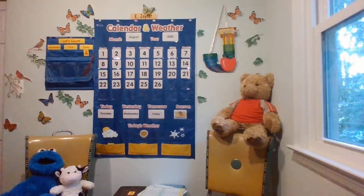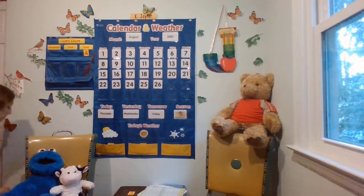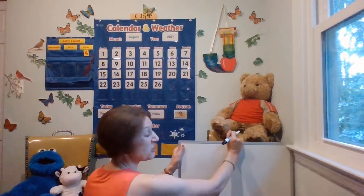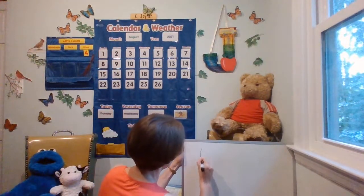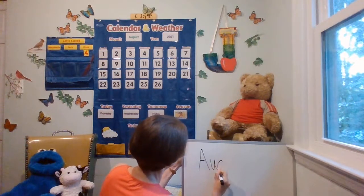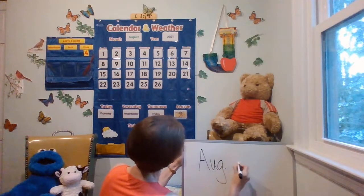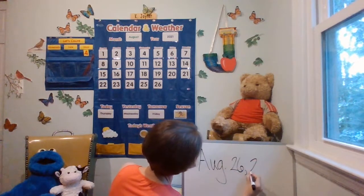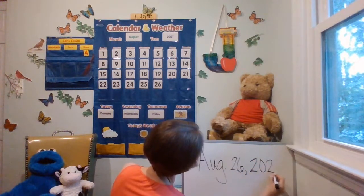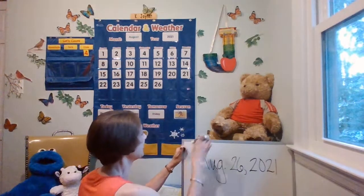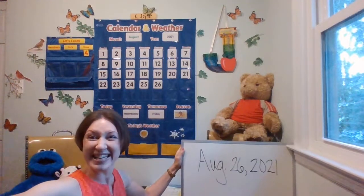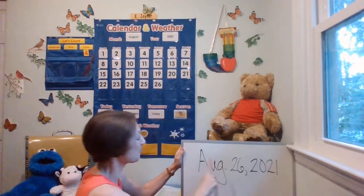It's time to write today's date. You need something to write on and something to write with. Let's begin with a capital A for August — we're going to do the short version: A-U-G, period. It's called an abbreviation. August 26, 2021. Write it down: August 26, 2021. Nice job! Remember to write it and practice reading it.